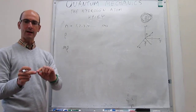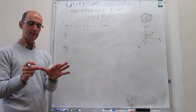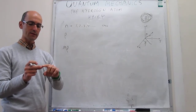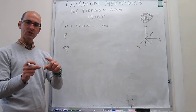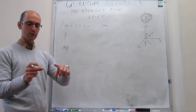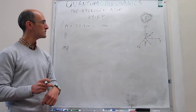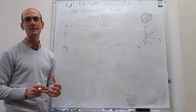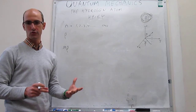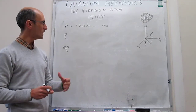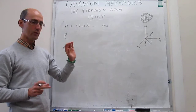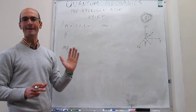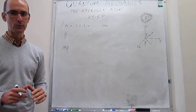N also determines the shape in the radial direction — as you move away from the nucleus, N determines whether you have nodes or no nodes along the radial direction. Finally, N also determines the energy of the state. For now, the key point is that there's no restriction on the value of N; N can be any integer number from 1 all the way to infinity.